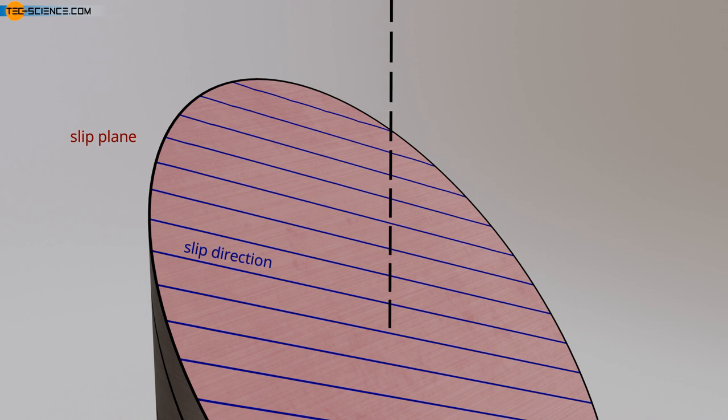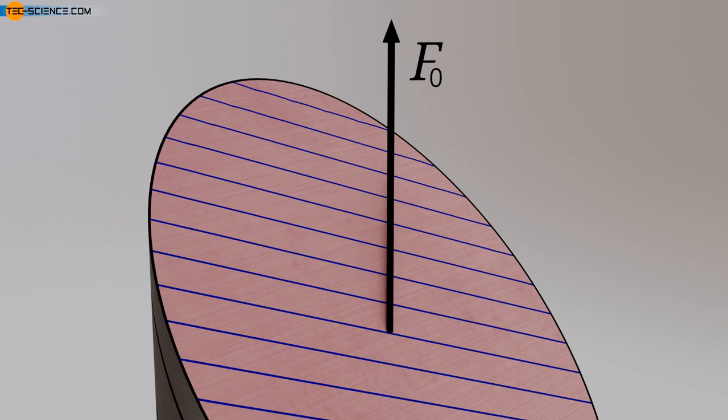Only forces in the slip direction — which means in a slip system — are therefore relevant for a sliding of the atomic planes. Therefore, the first question is how the force in a slip system can be determined from the external force F0, depending on the spatial orientation of the slip system. Relevant for this is the spatial orientation of the slip plane and the orientation of the slip direction. Both are defined by an angle.